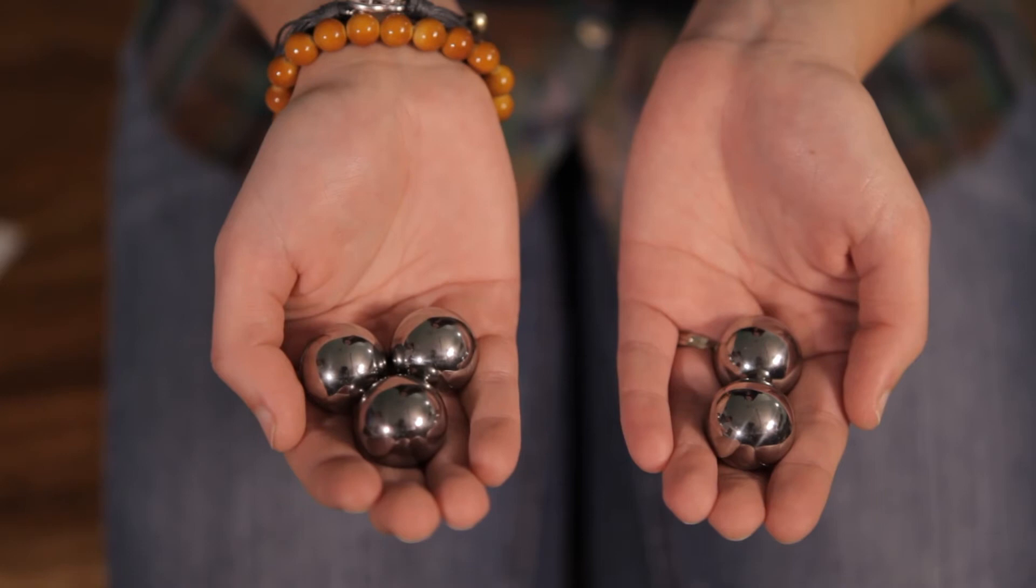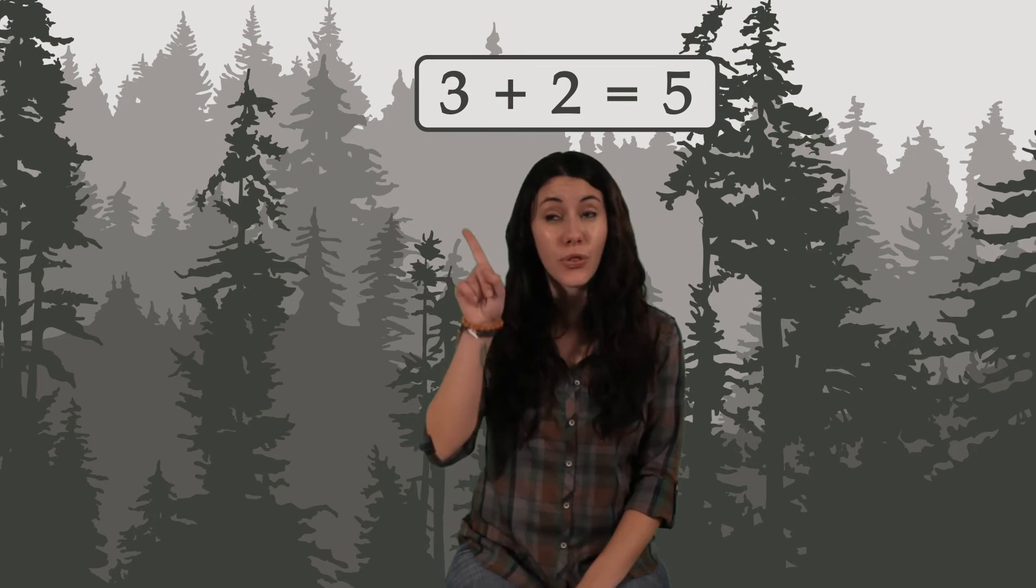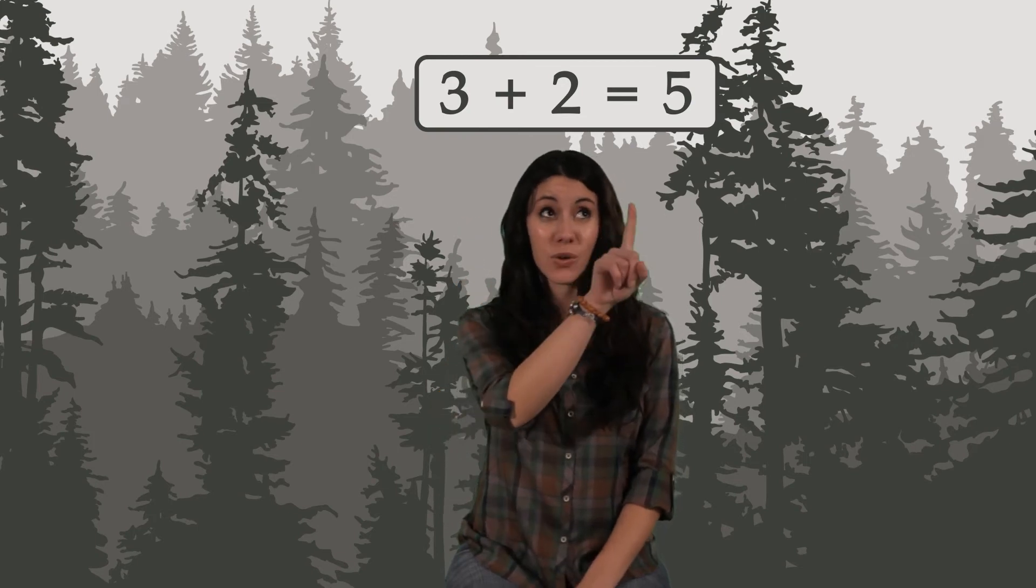In this hand, I have three marbles. In this hand, I have two marbles. I'm going to add them together. Three plus two equals five. Here's how you write it down. Three plus two equals five.